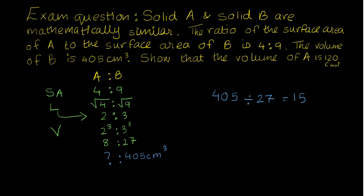So what I know is, in order to go from 27 to 405, I need to multiply by 15. So in order to go from 8 to this answer, I would also need to multiply by 15 here. So what I'm going to do is, I'm going to go ahead and multiply 8 by 15. This should give me the volume of shape A, which is 120 centimeter cubed.